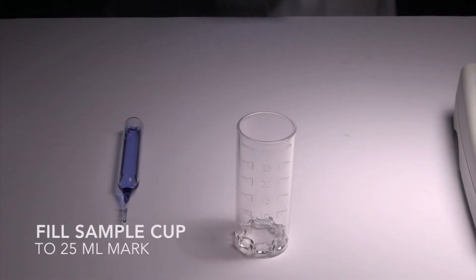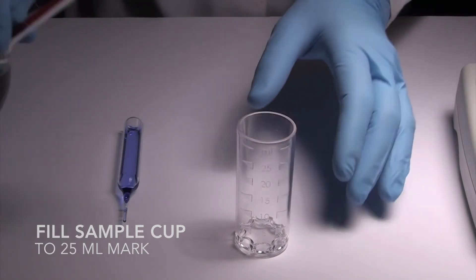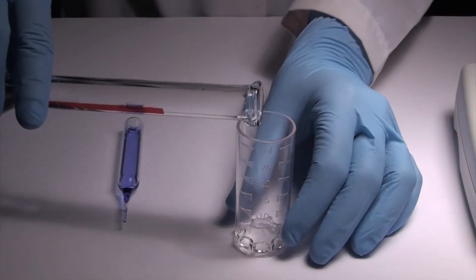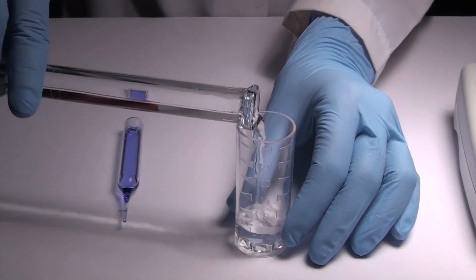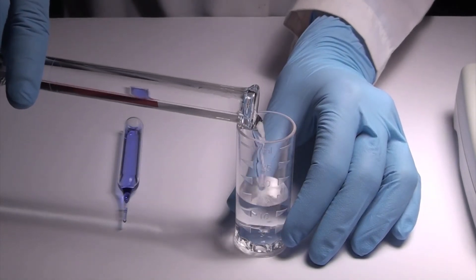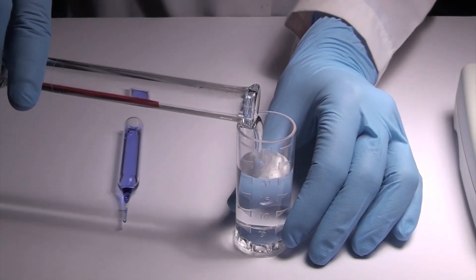Then, measure the ozone in the sample. Fill the sample cup to the 25-milliliter mark with the sample to be tested, being careful to minimize turbulence. Ozone loss from sample occurs rapidly, so do not transfer sample to other containers.